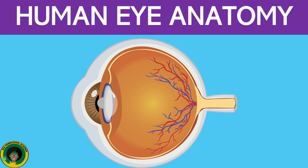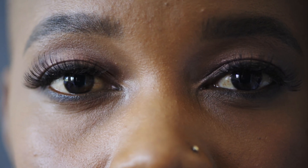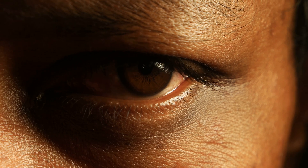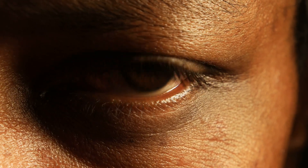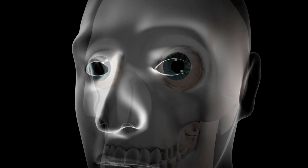The human eye is a complex organ responsible for vision, composed of various parts, each with specific functions. Each of these components play a vital role in the eye's ability to receive and process visual information, allowing us to see and interpret the world around us. I hope you learned something about the parts of the eye today.